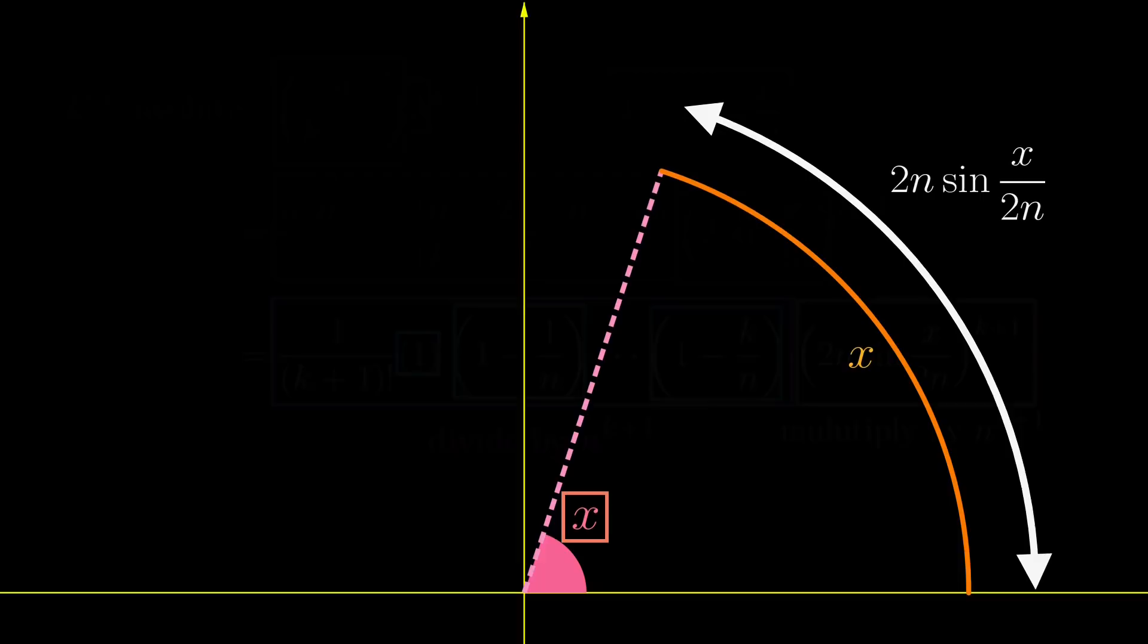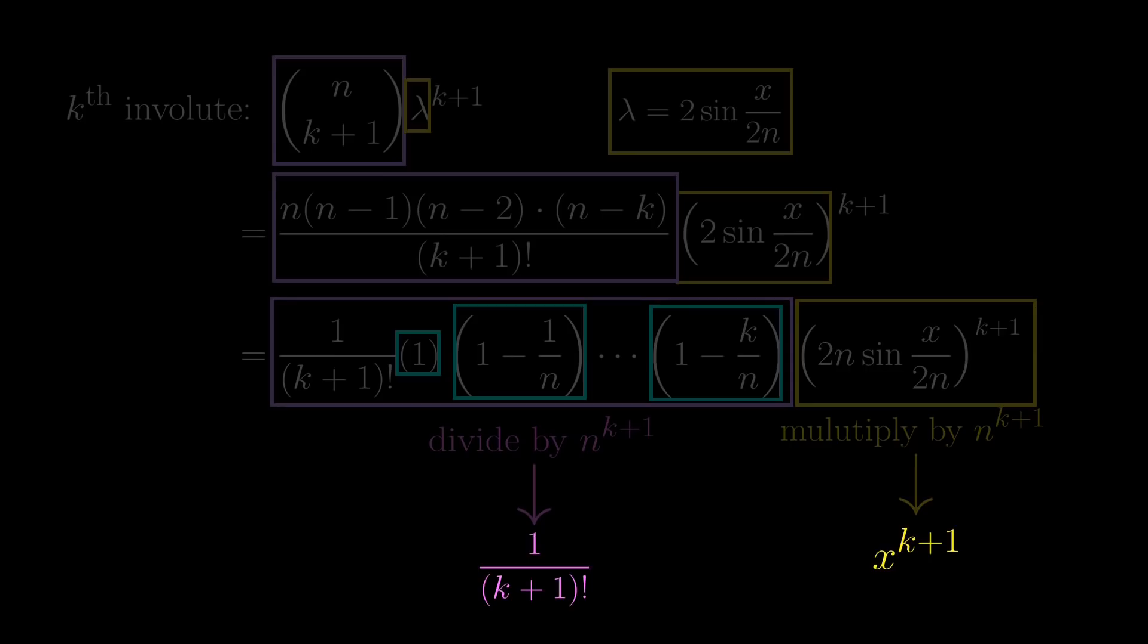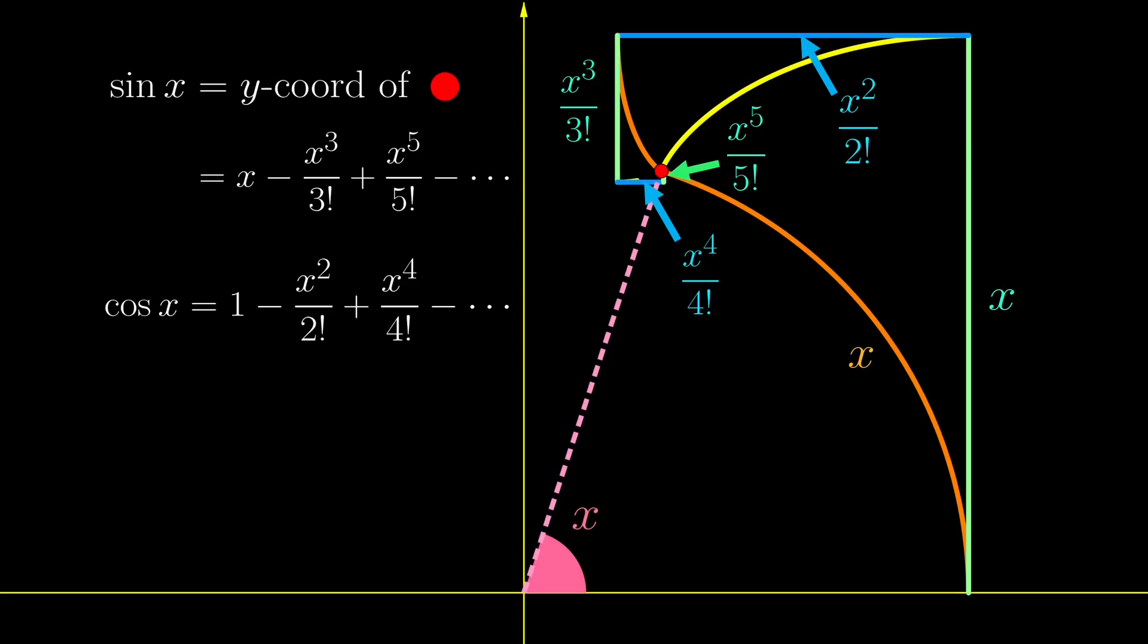So going back to our calculation, the yellow box tends to x to the k plus 1 as n grows bigger and bigger, and the purple box goes towards 1 over k plus 1 factorial, because when n grows much bigger than k, all the brackets tend to 1. So there you have it, the kth true involute has length x to the k plus 1 over k plus 1 factorial, which is exactly what I have claimed in the main sketch of the proof.